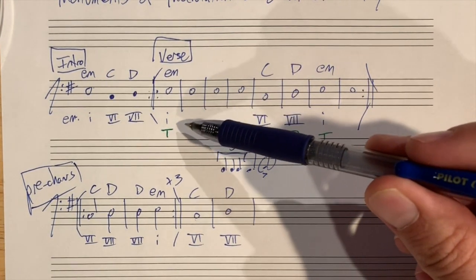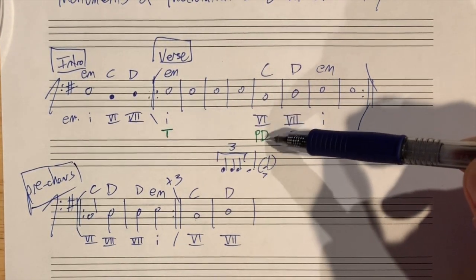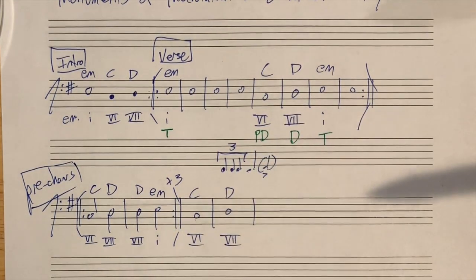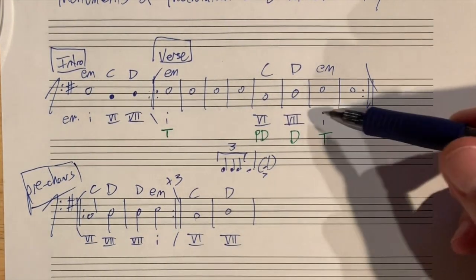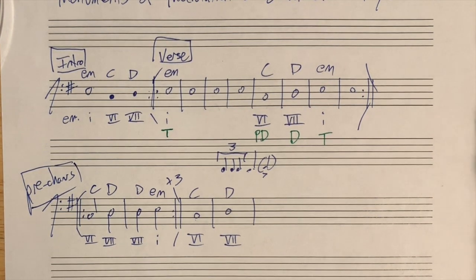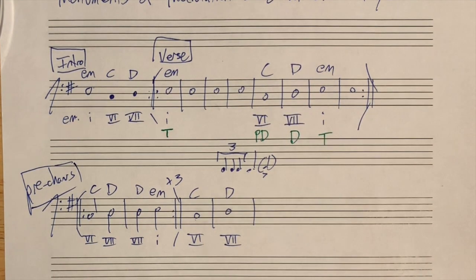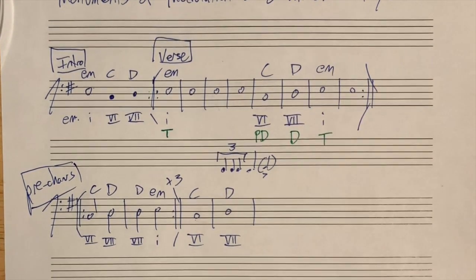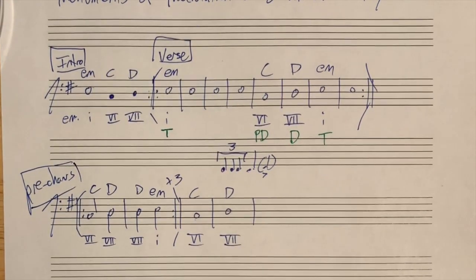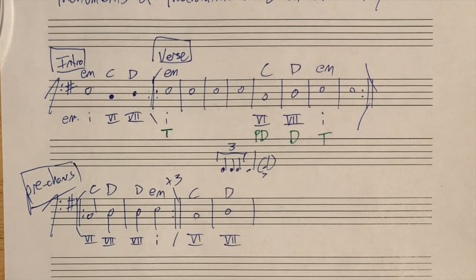We think about our functions with our feelings. Tonic feels like home. It's the gravitational center, safe home. When you get to a predominant chord, it's like you've stepped away from home. You're not in Kansas anymore, Toto. And when you get to a dominant chord, you're highly directed and highly motivated to come back to tonic. A predominant chord doesn't feel like it has to go anywhere. Dominant chords, dominant areas, the dominant function is very directed. It has a very definite destination, and that destination is tonic.